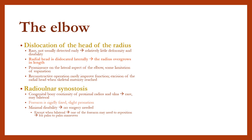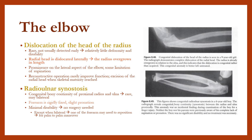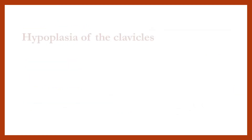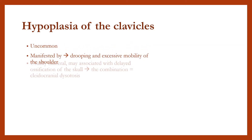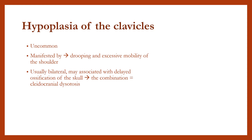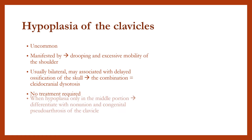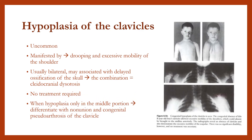Minimal disability means no surgery is needed. Hypoplasia of the clavicles is relatively uncommon, manifested by drooping and excessive mobility of the shoulder, usually bilateral, and may be associated with delayed ossification of the skull — the combination resulting in cleidocranial dysostosis. No treatment is required; when hypoplasia occurs only in the middle portion, differentiate with non-union and congenital pseudoarthrosis of the clavicle.